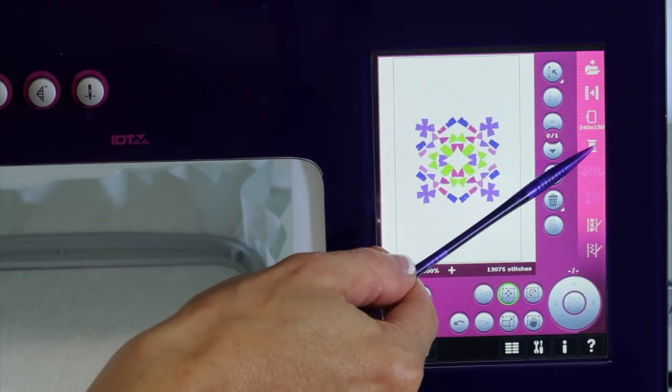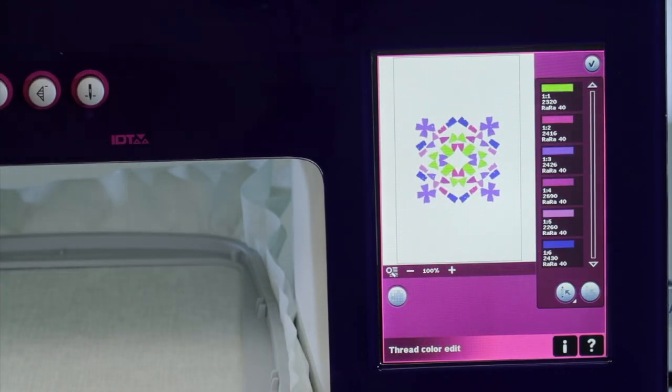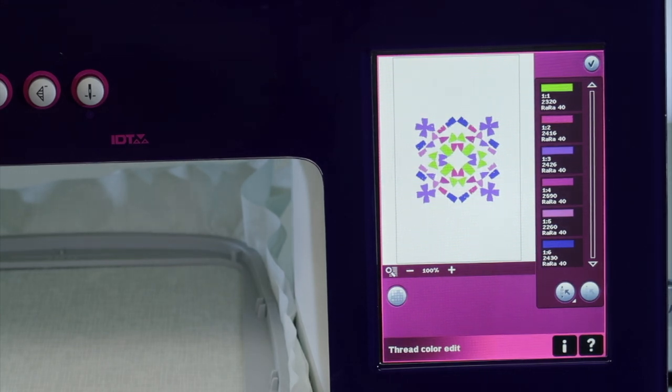Right over here is a picture of a spool of thread. This is color edit. You can actually do quite a few things here.